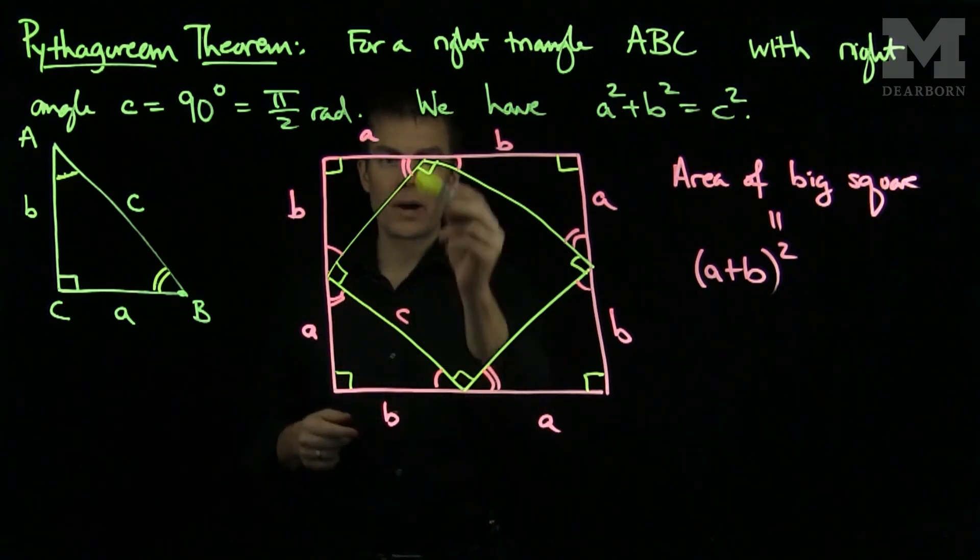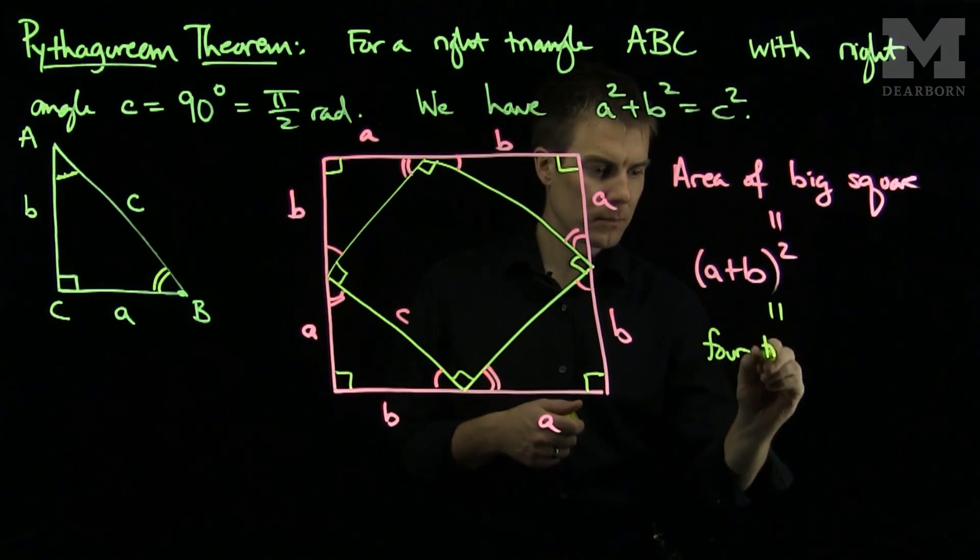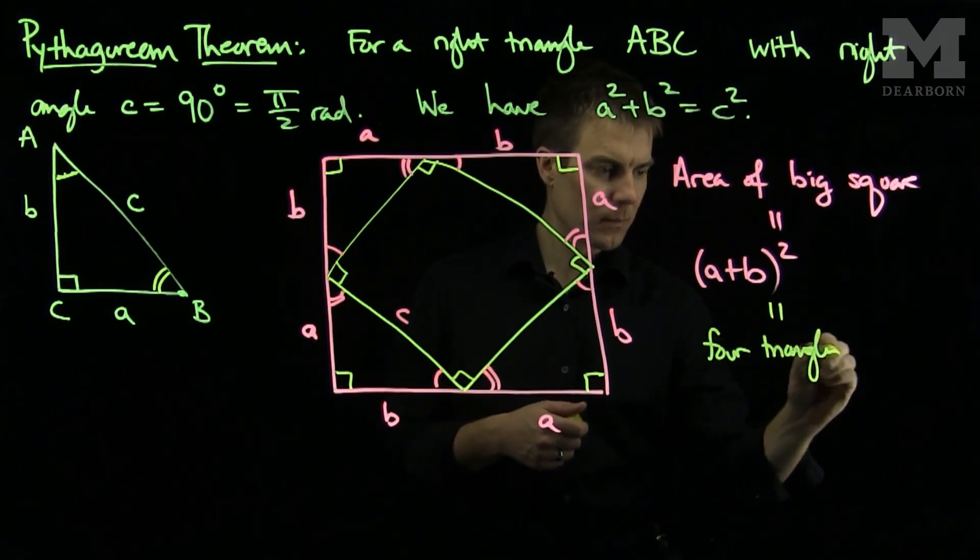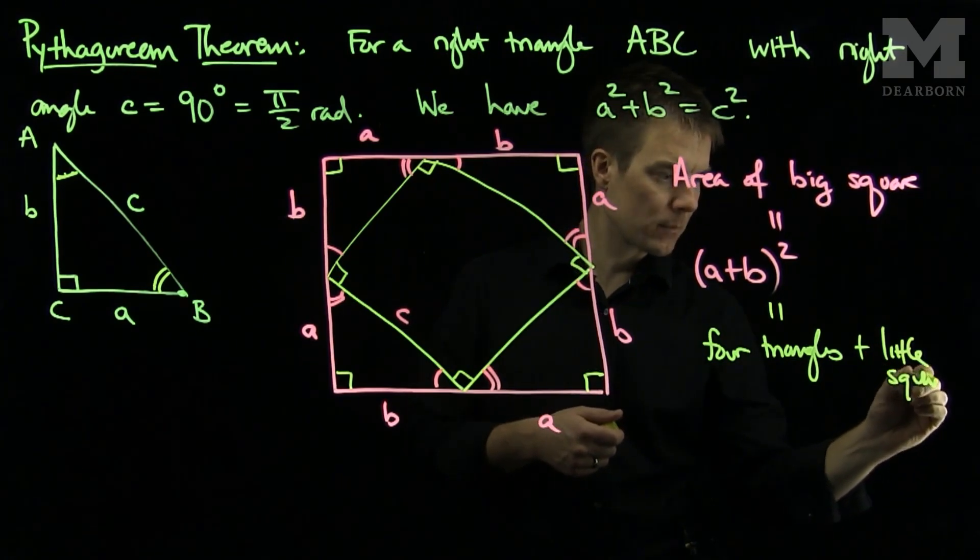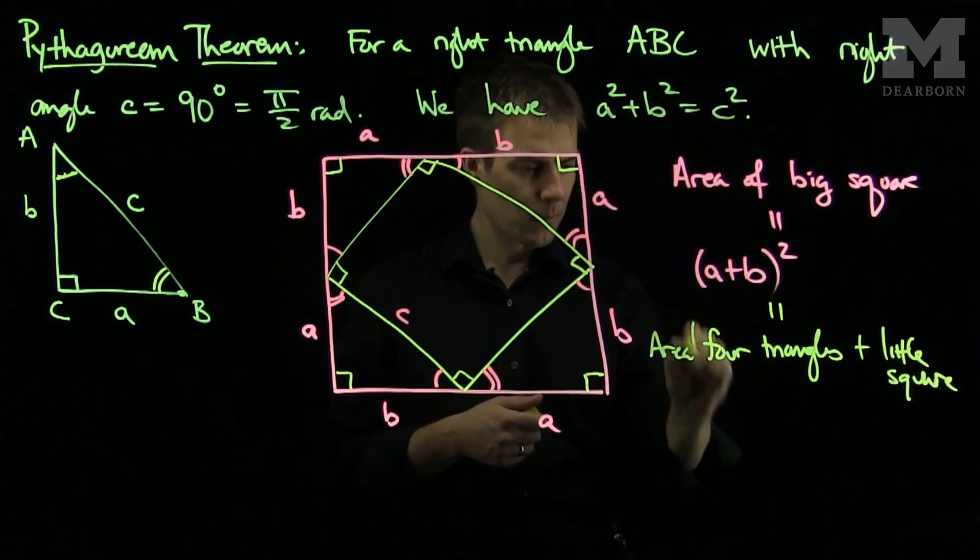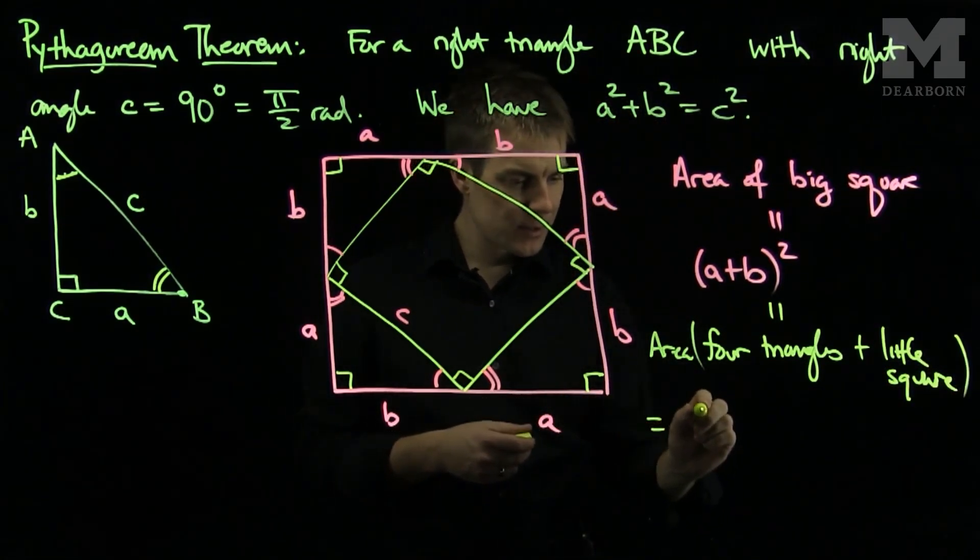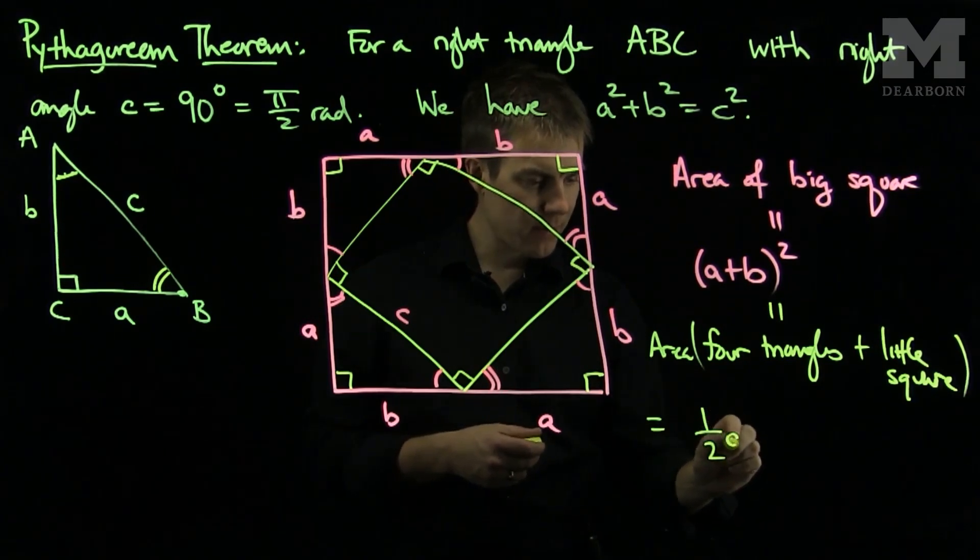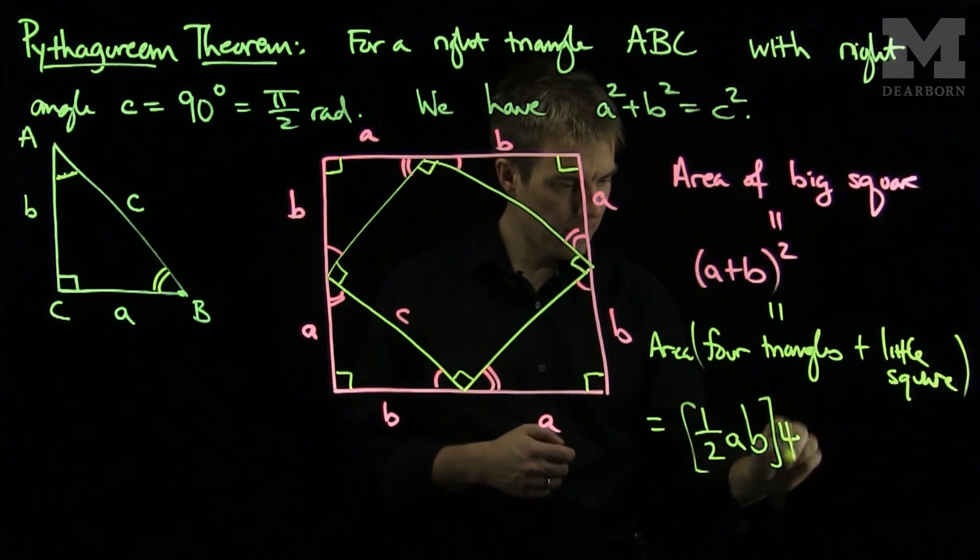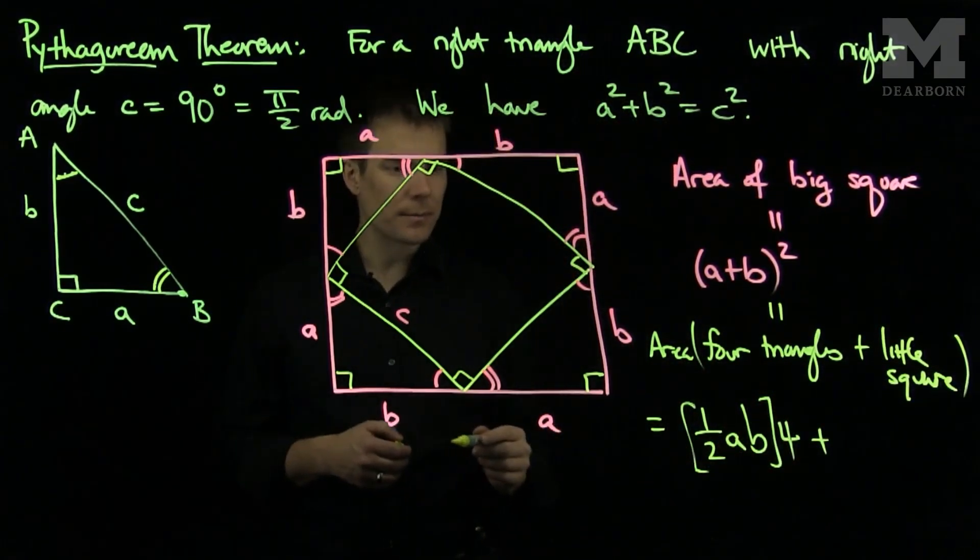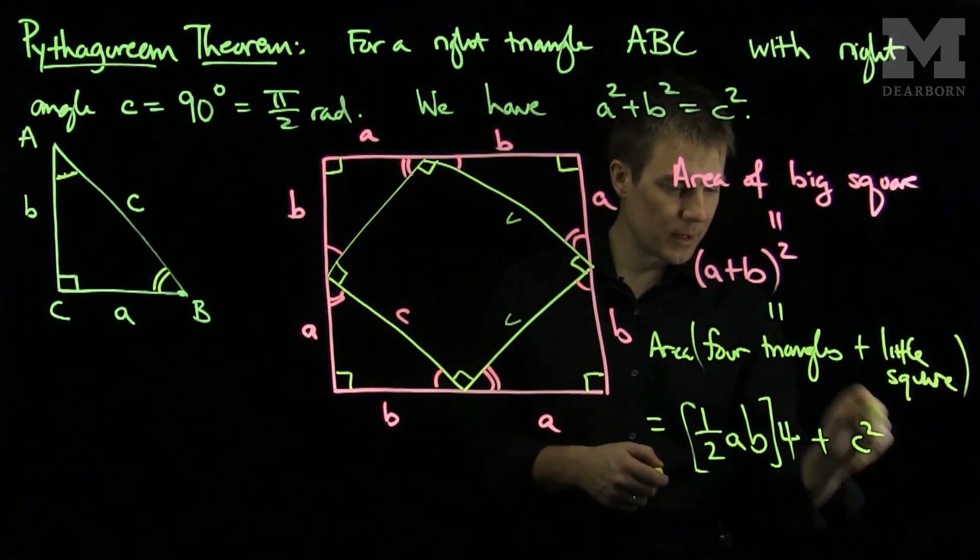Now the big square comprises of four triangles and a little square. The area of the four triangles is each of them has area one-half base, which is a, and height which is b, and there are four of them, plus the area of the little square. The area of the little square, well the side length of the little square is c, so the area of the little square will be c².